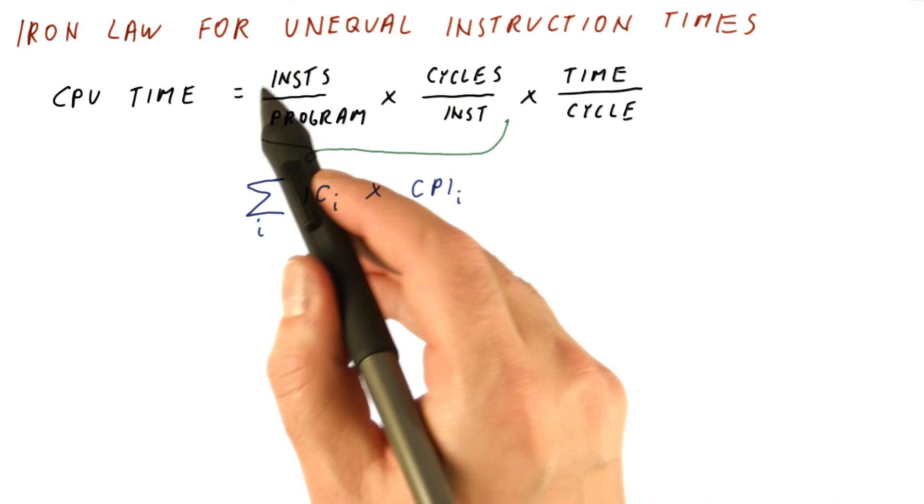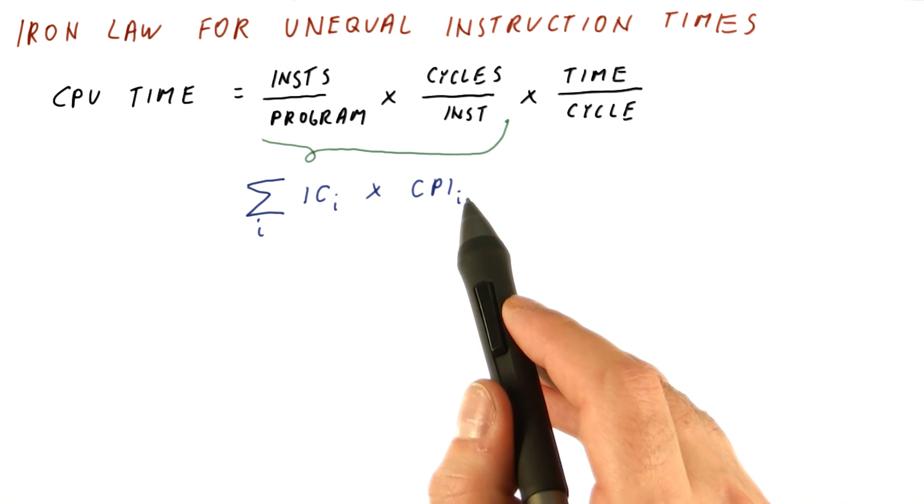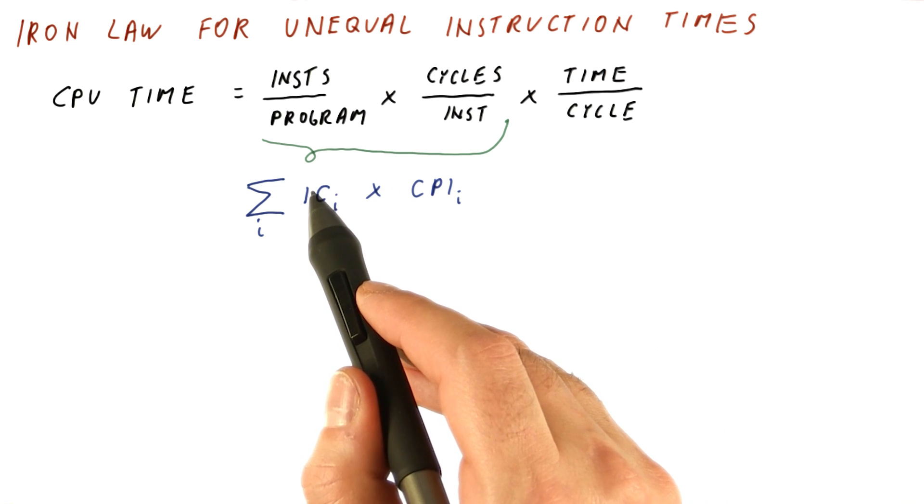Note that in the original iron law of performance, this was really how many cycles we need to execute the program. This is how many cycles we need for each type of instructions, all of them in a program.